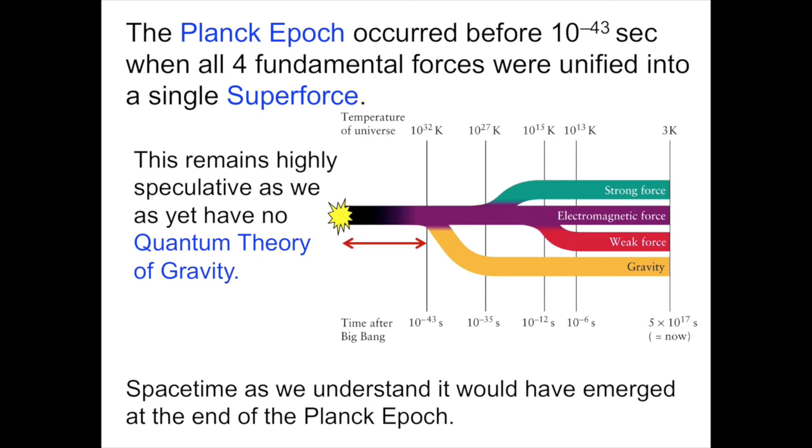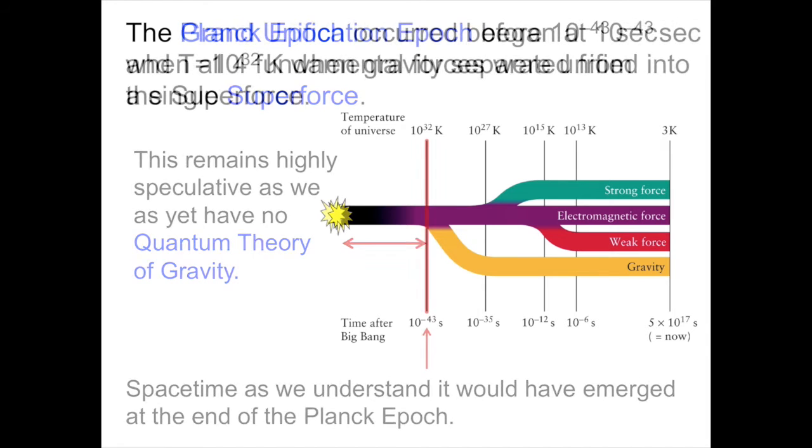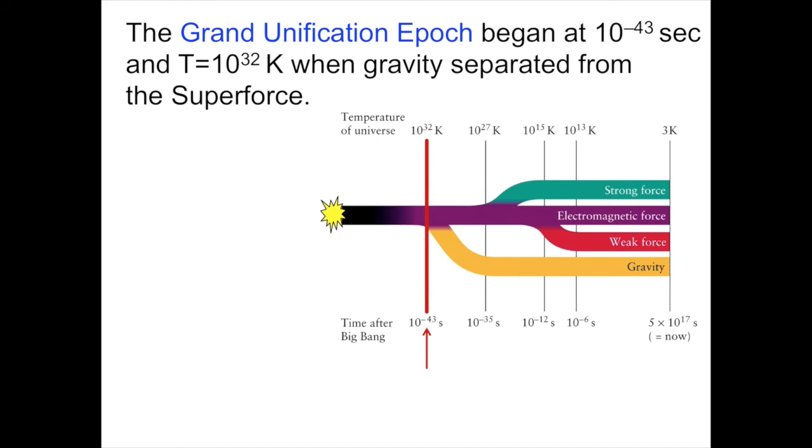But what we can say is that space-time as we understand it today would have emerged from whatever the Big Bang was at the end of the Planck epoch. Before the Planck epoch, with gravity combined in and unified with the weak, strong, and electromagnetic forces, our notions of space-time today would have been very different. We really won't know until we can crack the puzzle of the quantum description of gravity. But this epoch does not last very long.